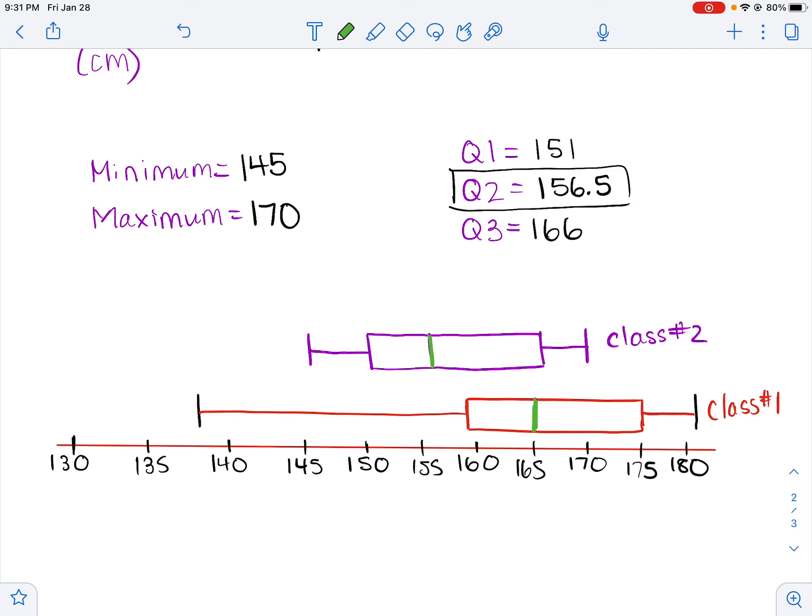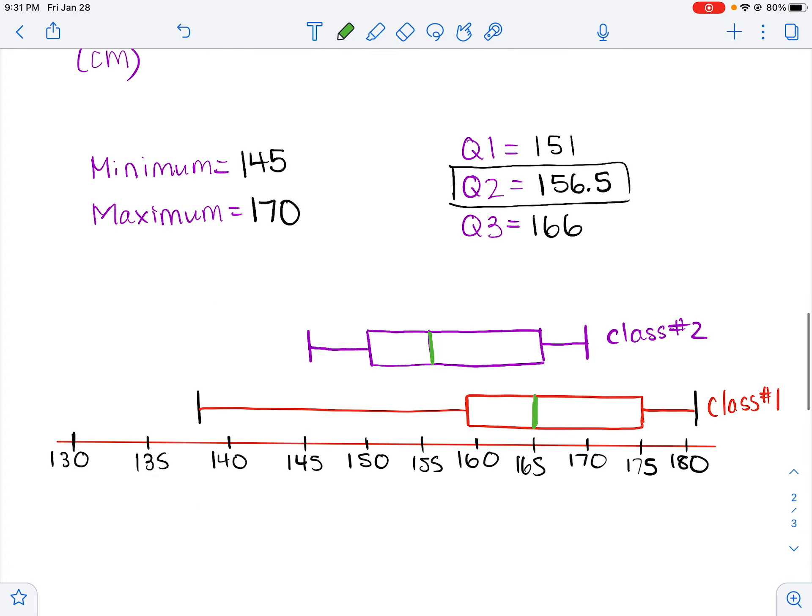One more thing I should say about box plots too. Since you know that they're split up into quarters, another cool thing is in each section, between the minimum and Q1 is 25% of the classes in that section. And then between Q1 and Q2, another 25% of the class will be there. Between Q2 and Q3, that's another quarter of the class. And then the final 25% is between Q3 and the max. So even though these boxes look bigger, it just means their heights are more spread out. There's actually the same number of people in that section. So there you go.